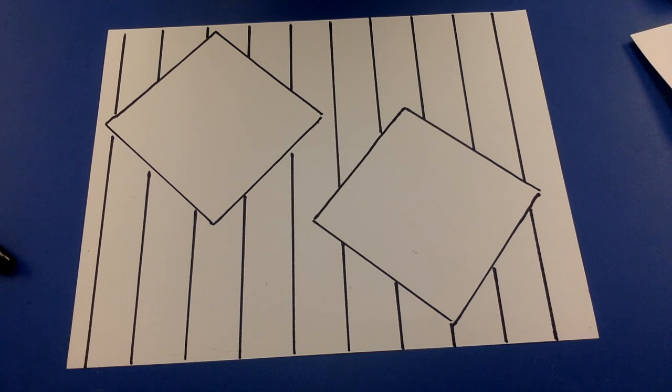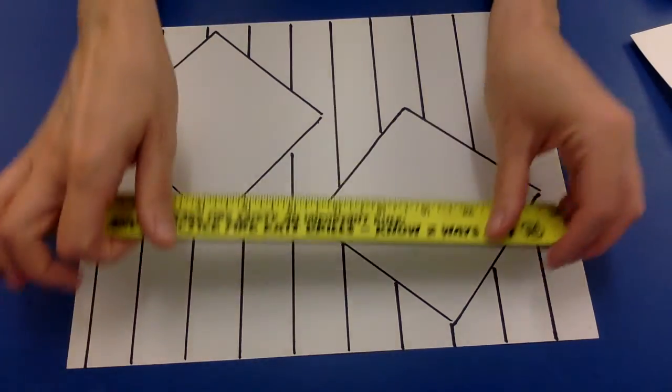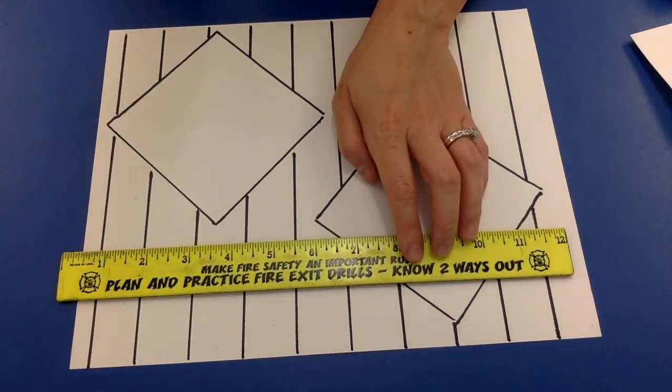So last time I saw you, we traced our squares, we made our straight lines in the background. We need to fill in our squares or our diamonds